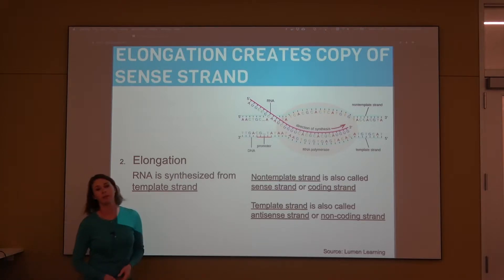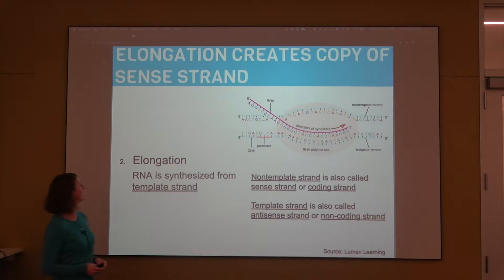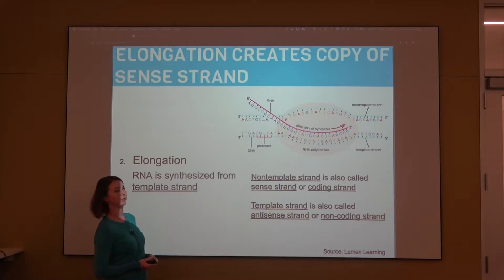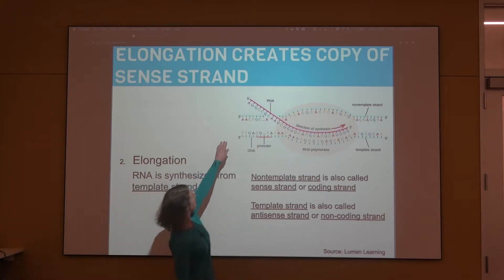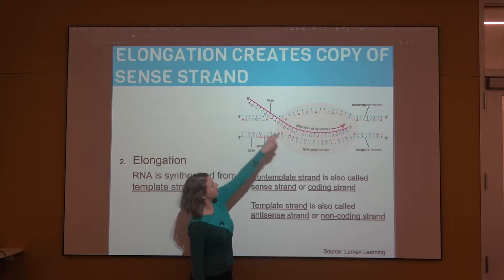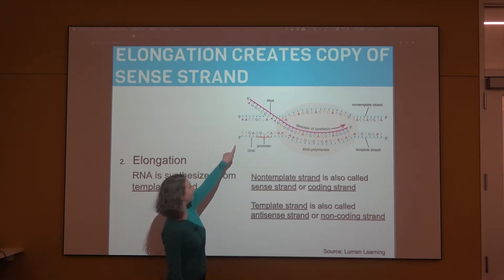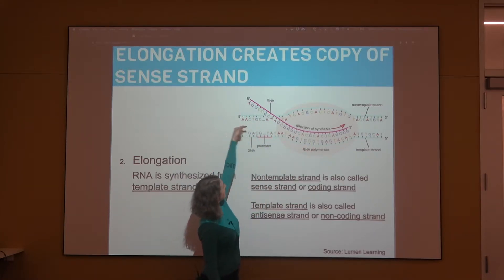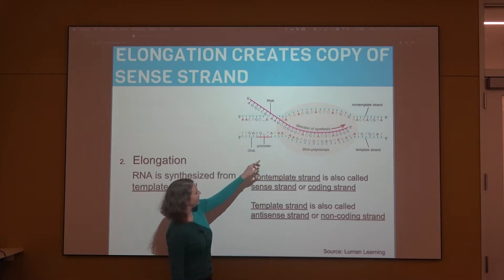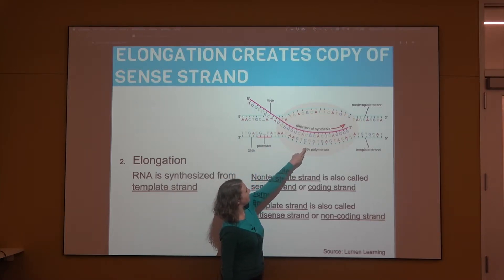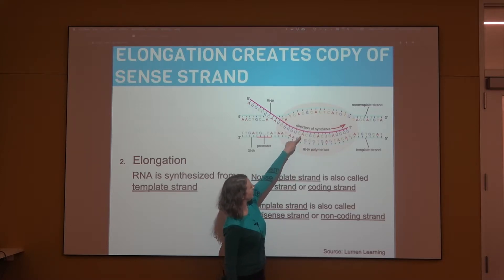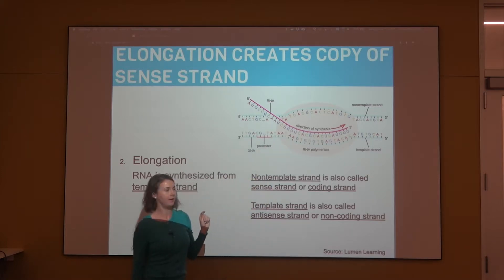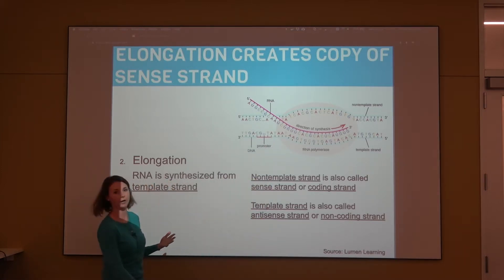Elongation occurs with RNA polymerase 2 rather than DNA polymerase. RNA is synthesized from the template strand in the 5' to 3' direction. You can see here the non-template strand is the top strand, listed 5' to 3', and the elongating RNA is being synthesized 5' to 3' from the template strand. Looking at the complementary base pairs being added — G to C, T to A — you'll notice that instead of a T being added complementary to the A, we have a U. This is what's specific to RNA compared to DNA.